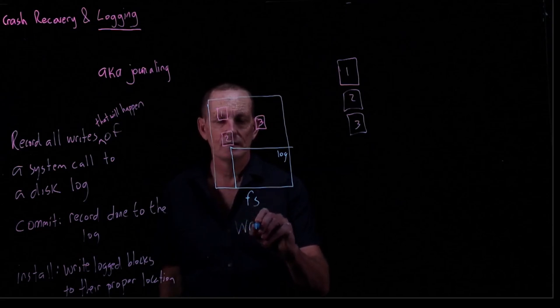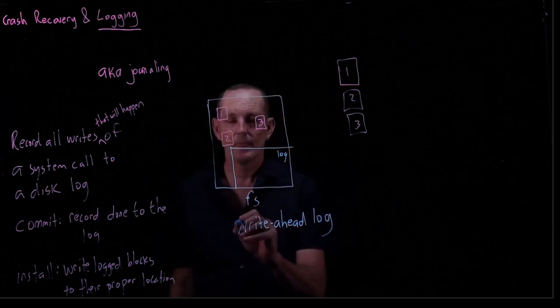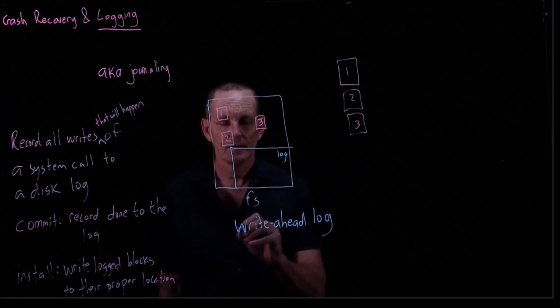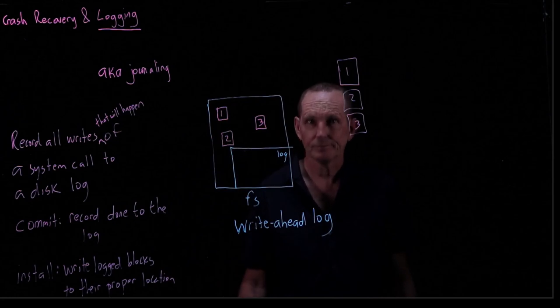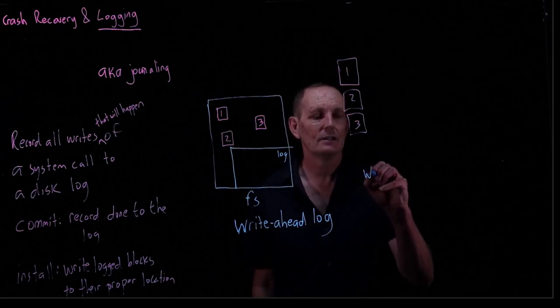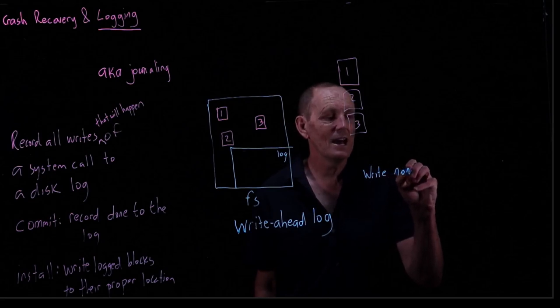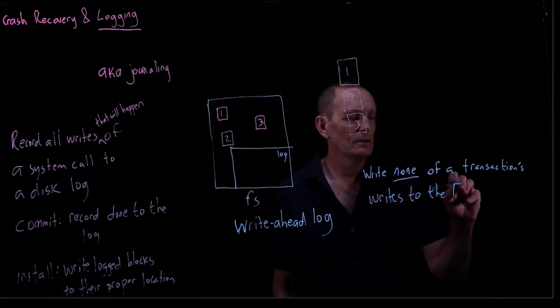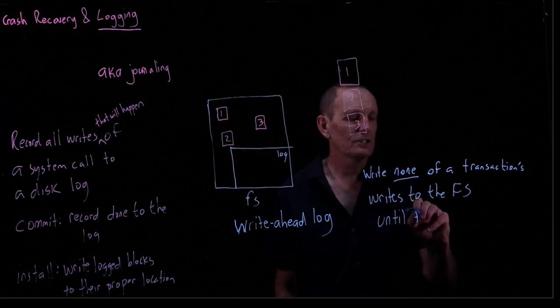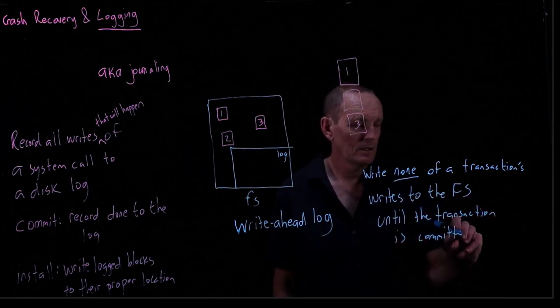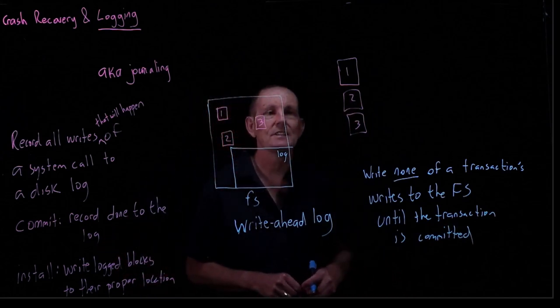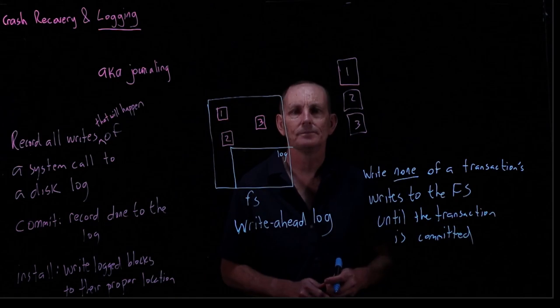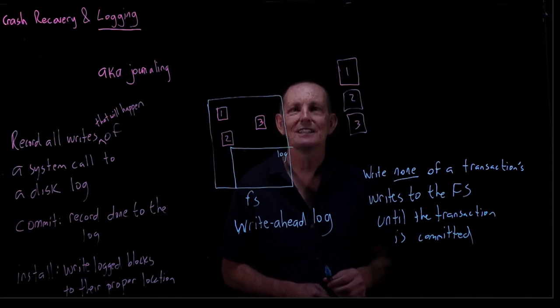This is called a write-ahead log because we are writing the log ahead of actually writing to the file system. And the rule of this log is where you write none of the transaction's writes to the file system until the transaction is committed. How do we know it's committed? Because there's a done. So until the done is there, nothing goes into the file system.